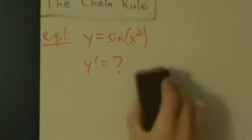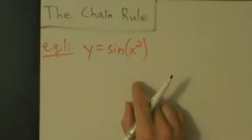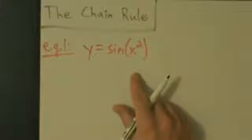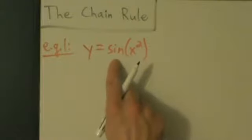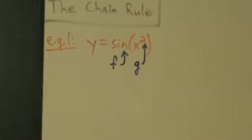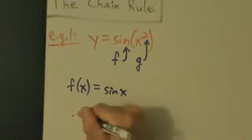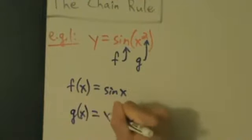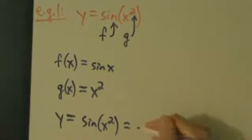Let's zoom out a little bit. So we have y equals sine of x squared. When we do the chain rule, we have a function of composition — f of g of x. So f is going to be our outside function, which is the sine, because starting from x, first we square it, then we take the sine. So f is the sine, and g, the inside function, is squaring. In other words, f of x is sine of x, and g of x is x squared. So y equals sine of x squared, and that is f of g of x.